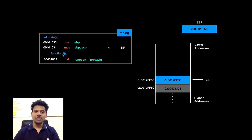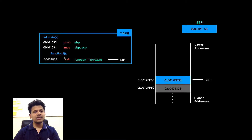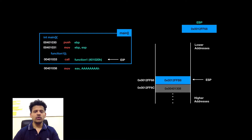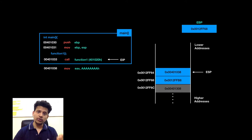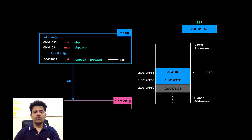The next C program statement is calling function 1, and its assembly equivalent is call function 1. For that, we will push the next instruction's address onto the stack, because using that address eip can return to main. Now we will pass control to function 1.